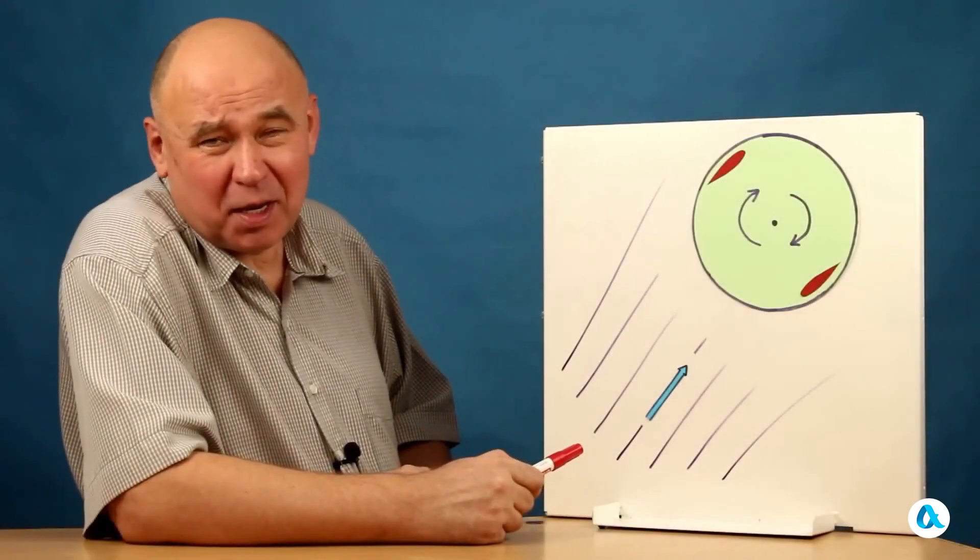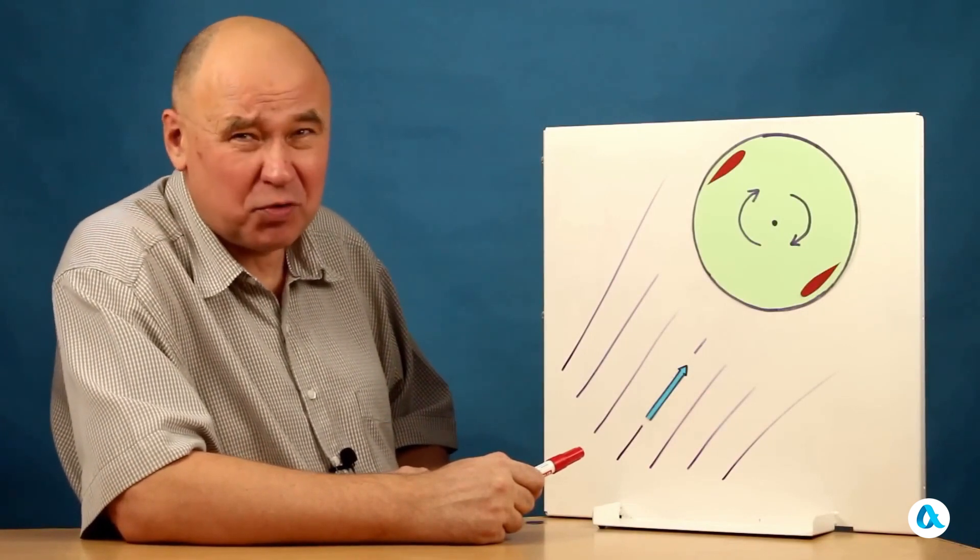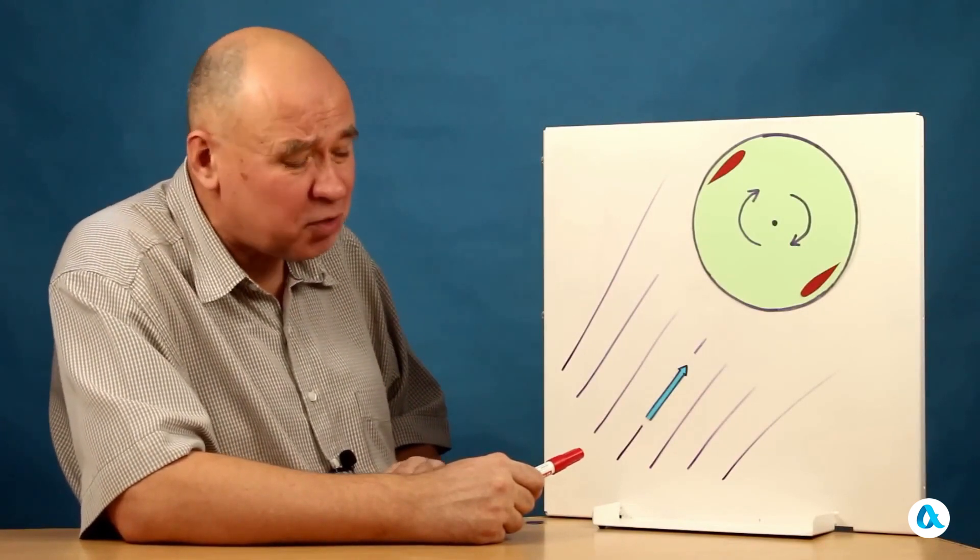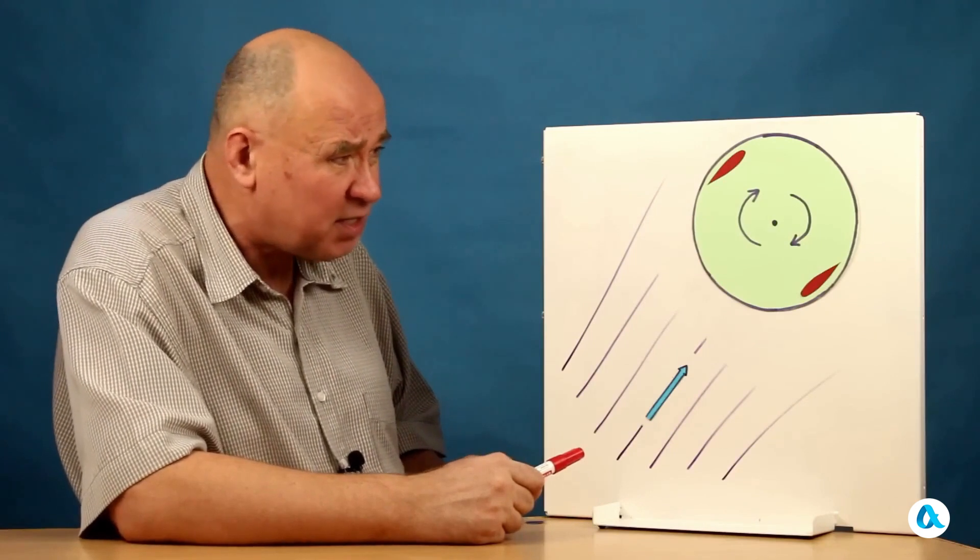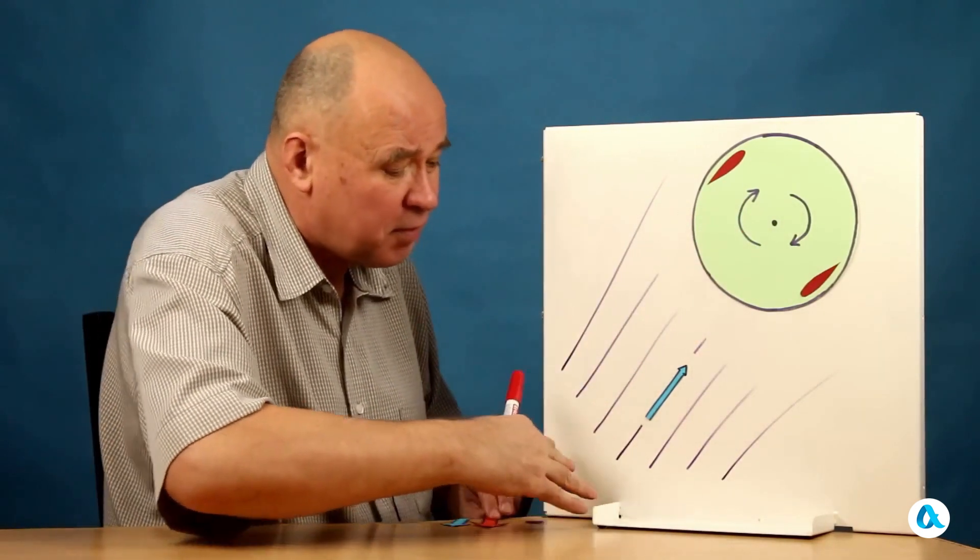And since our flying apparatus descends straight and uniformly, it will be convenient for us, as we often do, to switch to a reference frame associated with this apparatus, where its axis is stationary. Then we see the airflow coming from below.